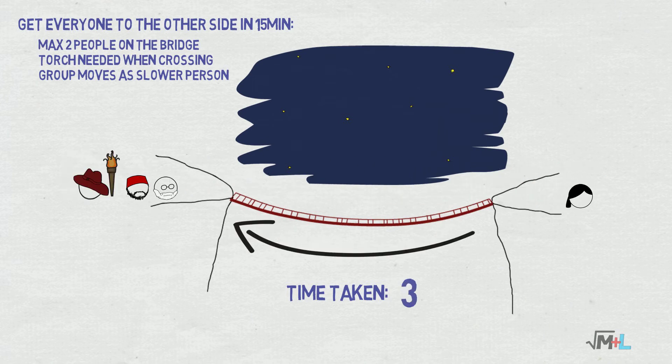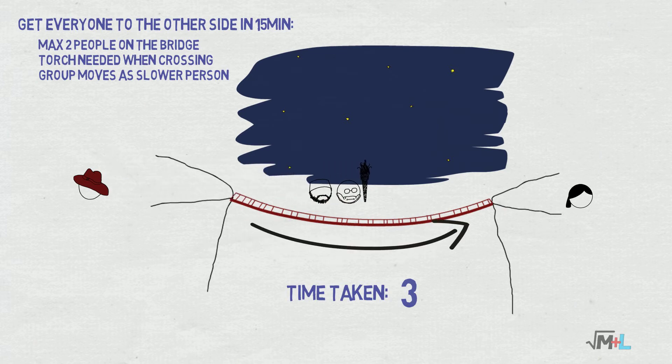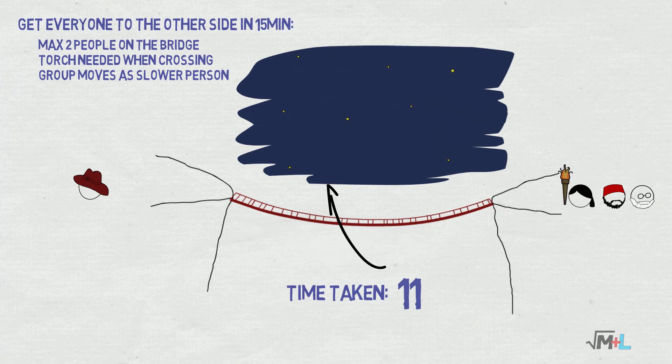Now here is the crucial part. He passes the torch to the old guys and they together slowly stroll to the other side of the bridge for eight minutes, which makes 11 minutes taken so far. Then Marion takes the torch from them and runs back for two minutes to save the love of her life.